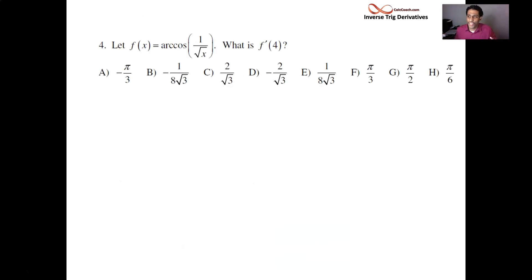I have the arc cosine of 1 over root x. I'm interested in its derivative at 4. So, according to the formula, we should do negative 1 over the square root of 1 minus that function squared. But we should not stop there. We need to multiply that by the derivative of that function, chain rule. What is 1 over root x's derivative?